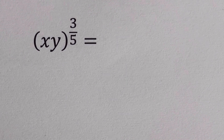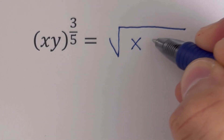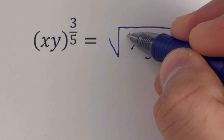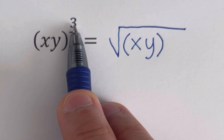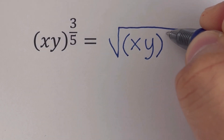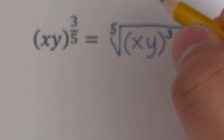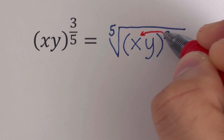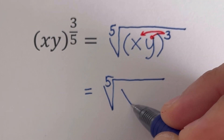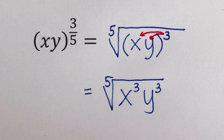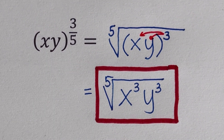We write the radical symbol, and our base x y is written as the radicand inside the parentheses. The numerator three is the exponent of this whole expression, and five is the index of the radical. Using the power of product property for exponents, both x and y each get the exponent three. So we rewrite this as the fifth root of x cubed times y cubed. That is the equivalent radical form of (xy)^(3/5). Did you get the same answer?